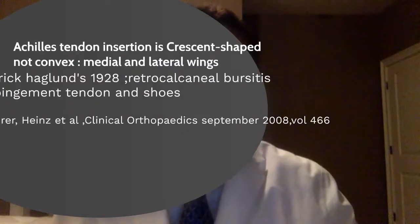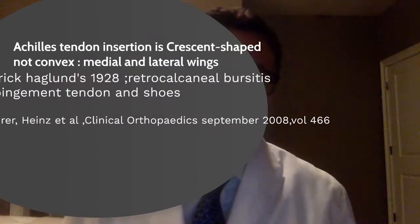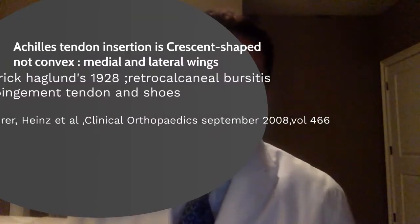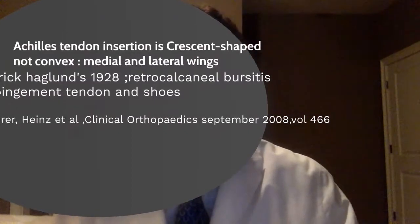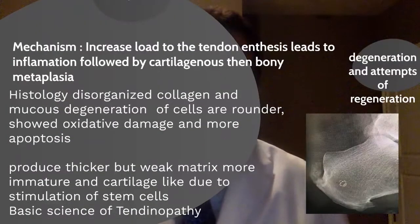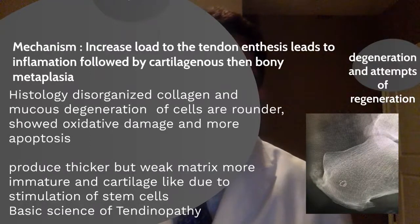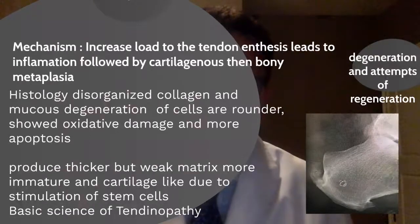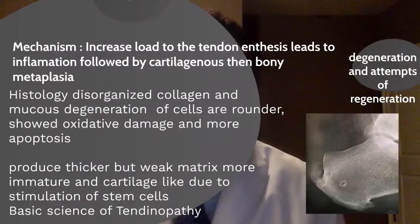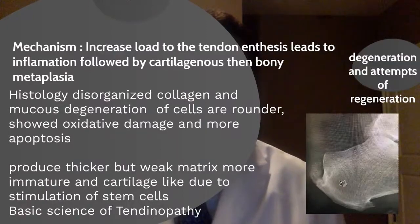Haglund in 1928 showed that retrocalcaneal bursitis is the origin of this problem, and it is an impingement between the tendon and the shoes — that was very well documented. The mechanism of injury is the increase of load to the tendon, which leads to inflammation followed by cartilaginous transformation and bony metaplasia.